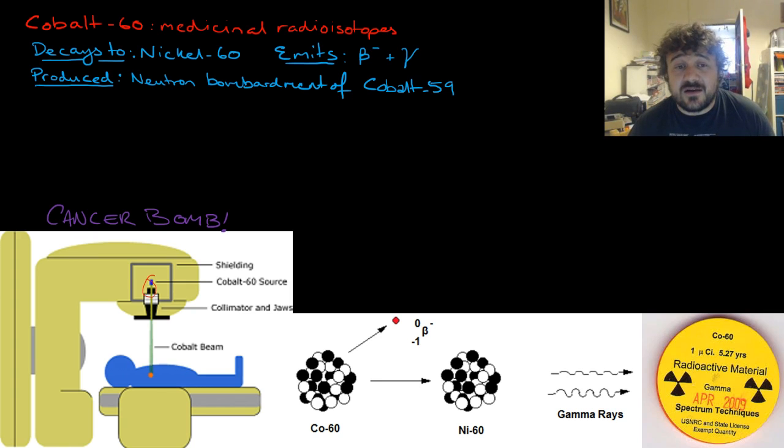If we produce it via neutron bombardment in a nuclear reactor, we use cobalt-59, which is non-fissile, and then that becomes a radioisotope.